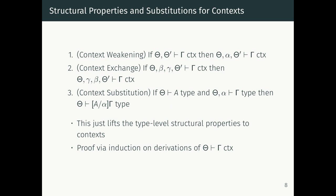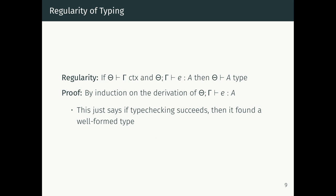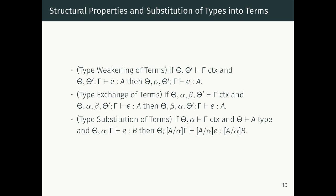We also need to show that all types occurring in a term variable context are well-formed. So if gamma is a well-formed context with a free variable alpha and we substitute capital A for alpha, we get back a well-formed context — this is lifting type-level structural properties to contexts. We do induction over the context well-formedness and at each stage appeal to substitution for types. Finally, we need a regularity property: if you have a well-formed context and a typing judgment, the type found for a term will actually be well-formed.